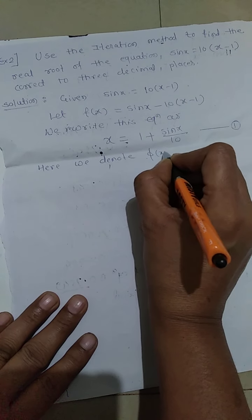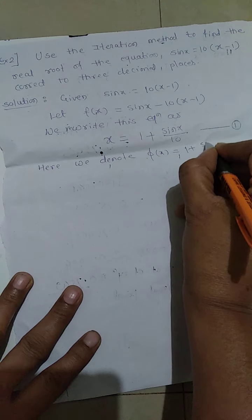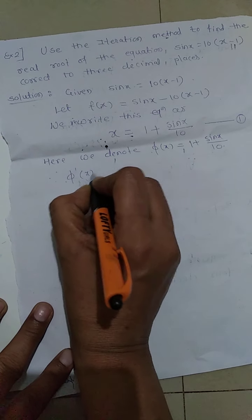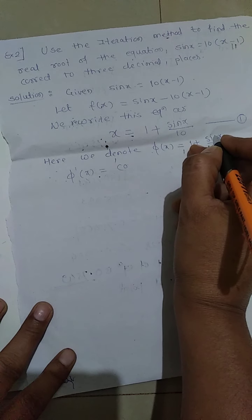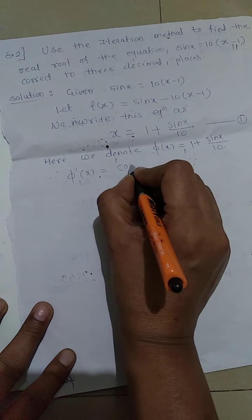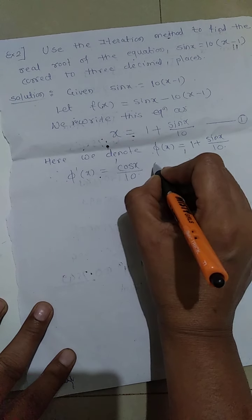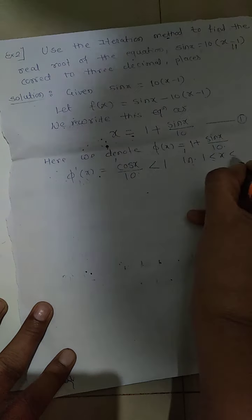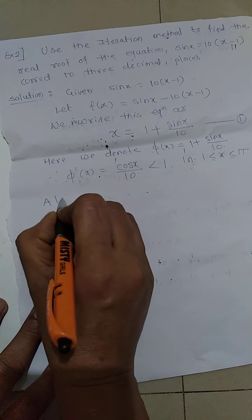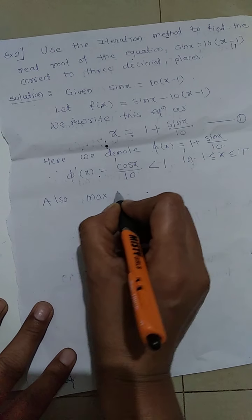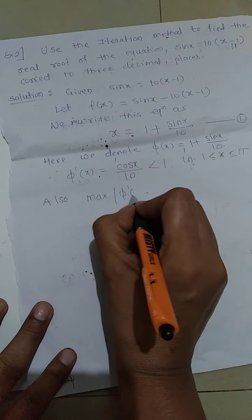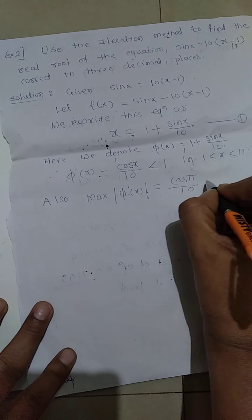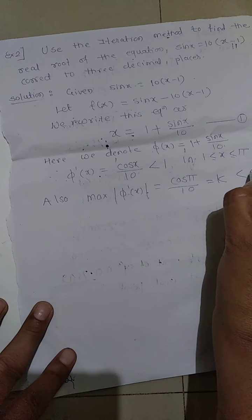Here we denote φ(x) = 1 + sin(x)/10. Therefore φ'(x) = cos(x)/10, which is less than 1 in the interval 1 < x < π. Also, the maximum of |φ'(x)| = cos(φ)/10, and that is equal to k, which is less than 0.75.